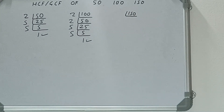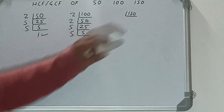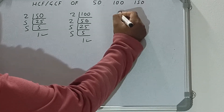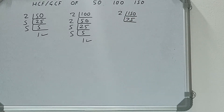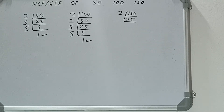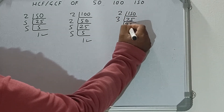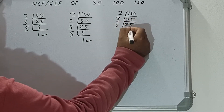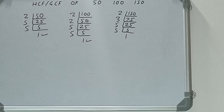Now we do the same with 150. Is 150 divisible by 2? Yes, because it's even. Divide it and we get 75. Is 75 divisible by 2? No, it's odd. Check 3 — is 75 divisible by 3? Yes. Divide it and we get 25. Is 25 divisible by 3? No. Check 5 — is 25 divisible by 5? Yes. Divide it and we get 5. 5 is again divisible by 5, giving us 1. Once we get 1, we're done.